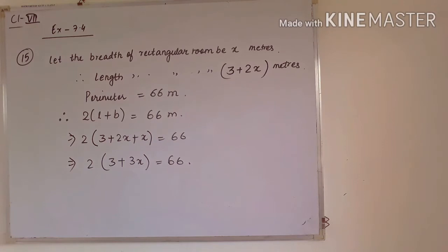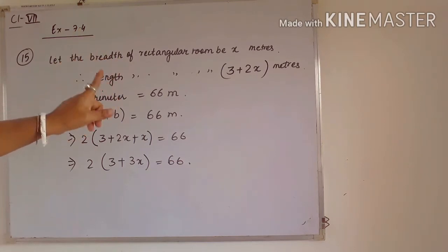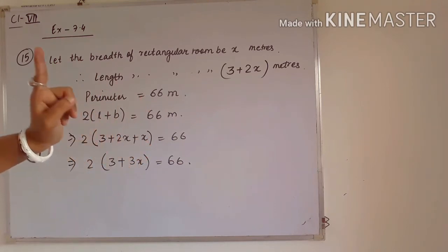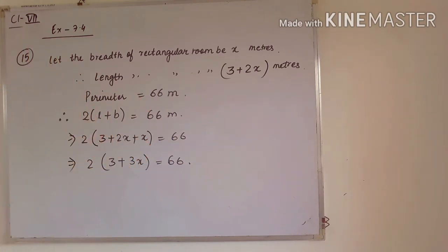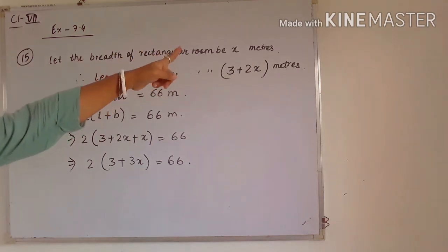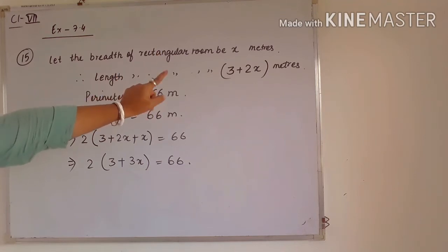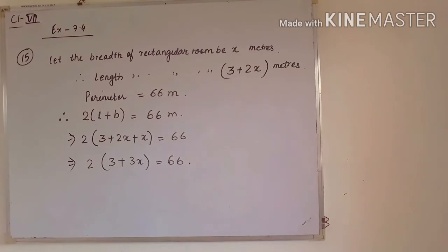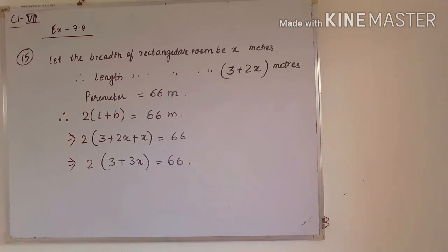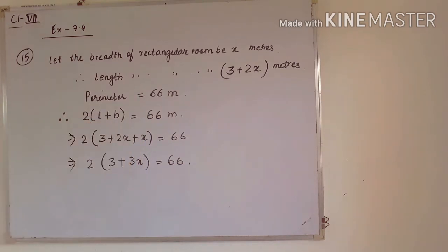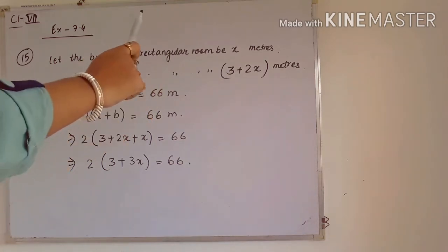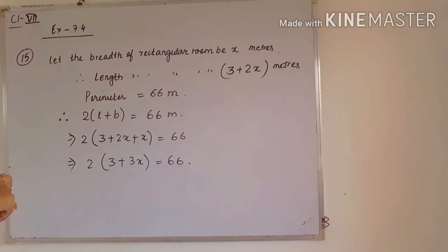Question number 15: It is given that the length of a rectangular room is 3 more than twice its breadth. 3 more than twice the breadth means 3 is added to 2 times the breadth. Let the breadth of the rectangular room be x. So the length will be 3 plus 2x. Perimeter is also given as 66 metres. We know the perimeter of a rectangle is 2 into (length plus breadth), which equals 66 metres. In place of length we write 3 plus 2x and for breadth we write x. After solving, we get 2 into bracket (3 plus 3x) is equal to 66.